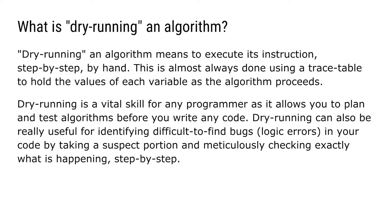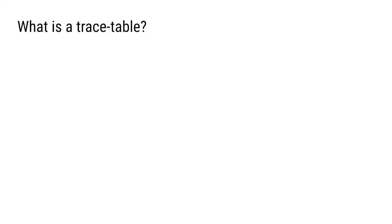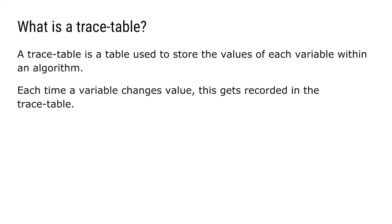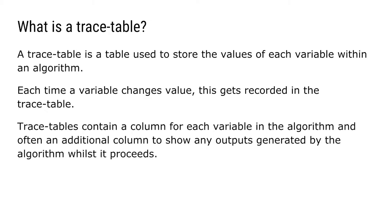Dry running can also be really useful for identifying difficult-to-find bugs — we call those logic errors — in your code, by taking a suspect portion and meticulously checking exactly what is happening step by step. A trace table is a table used to store the values of each variable within an algorithm. Each time a variable changes value, this gets recorded in the trace table. Trace tables contain a column for each variable in the algorithm and often an additional column to show any outputs generated by the algorithm while it proceeds.